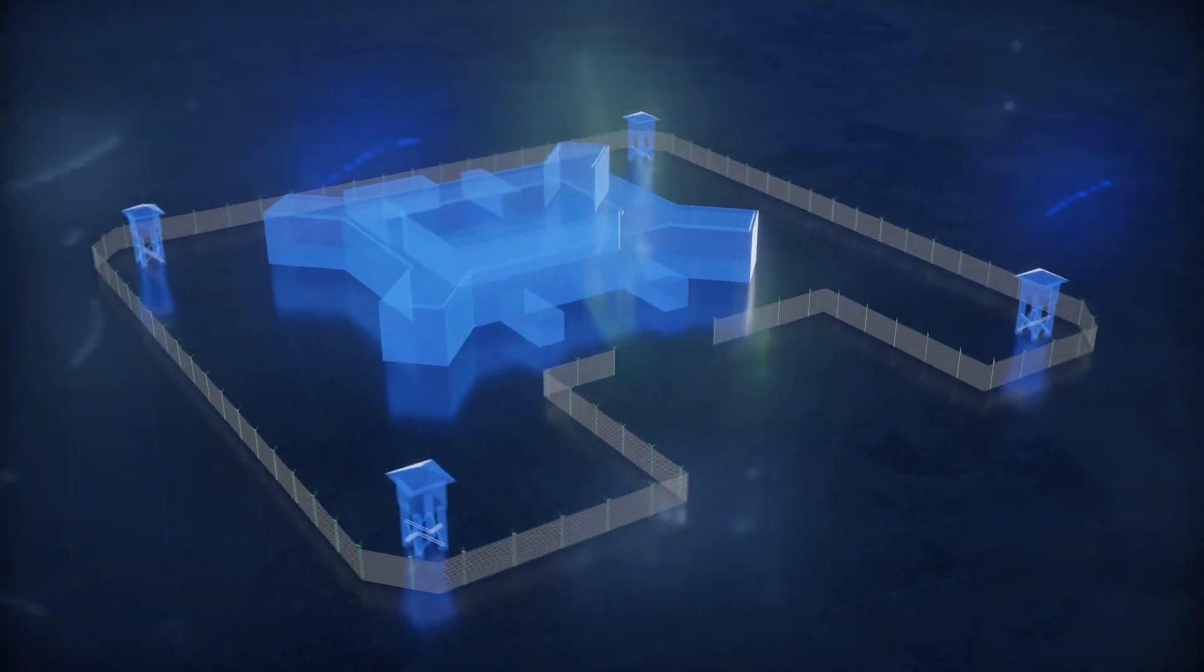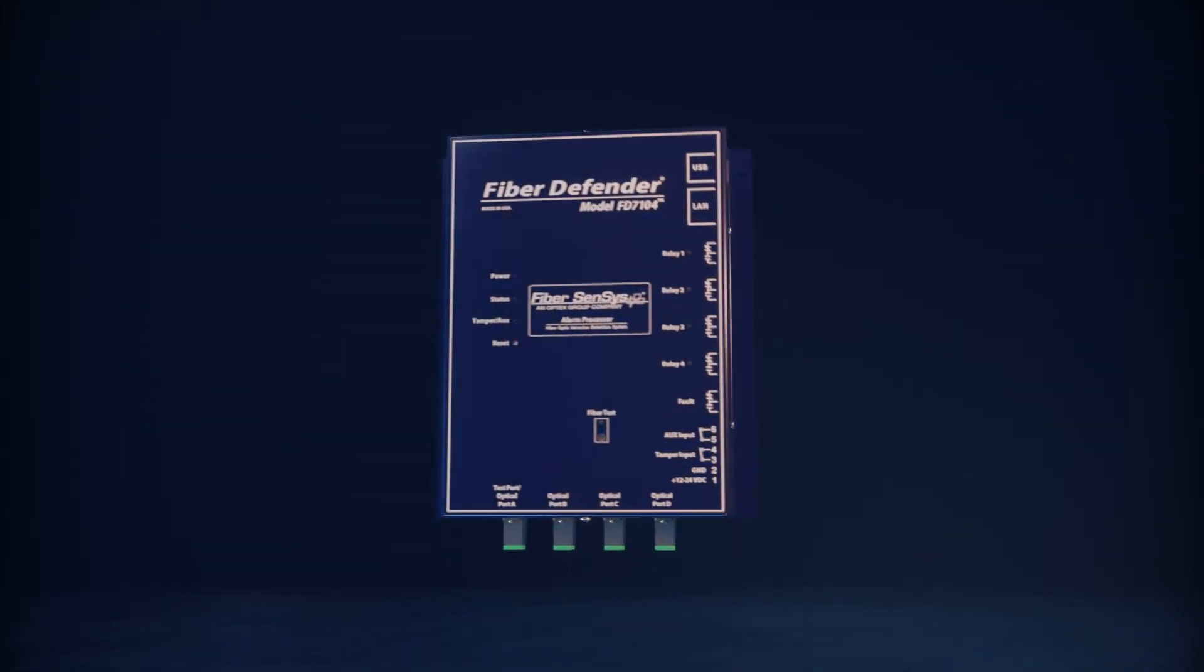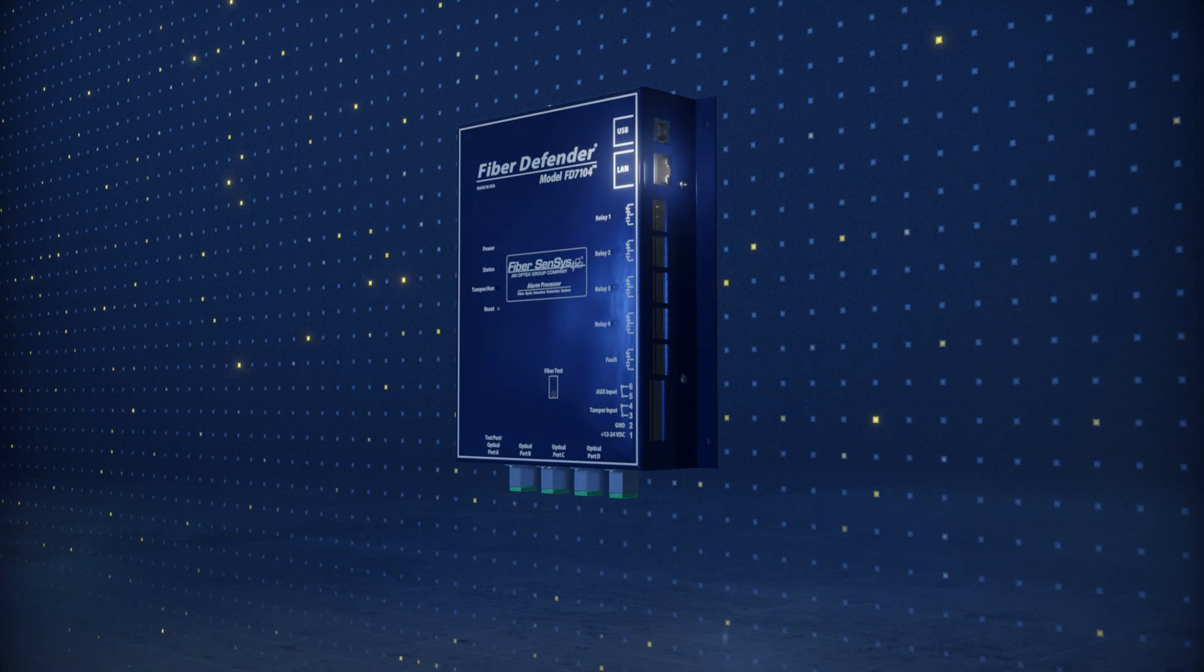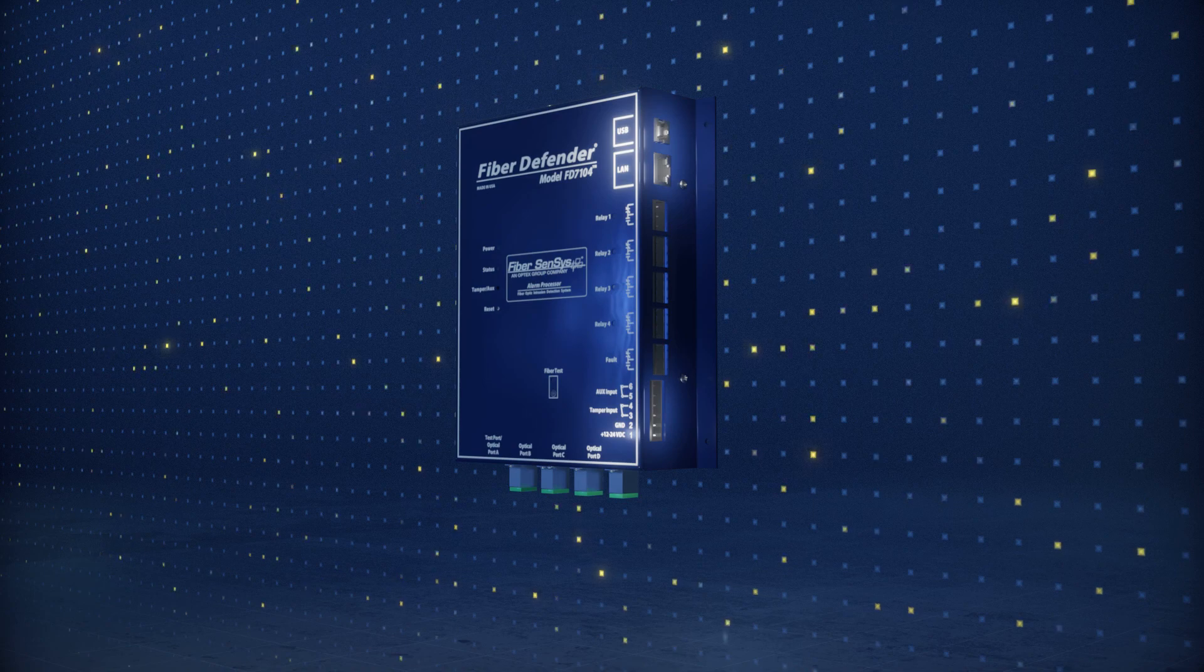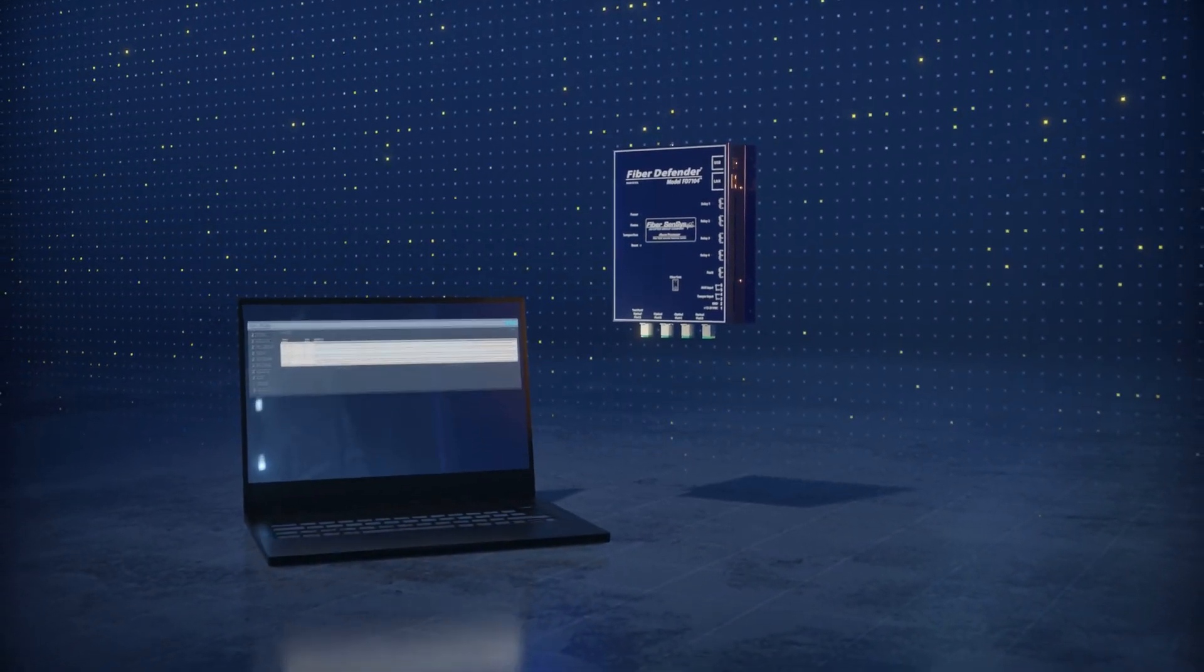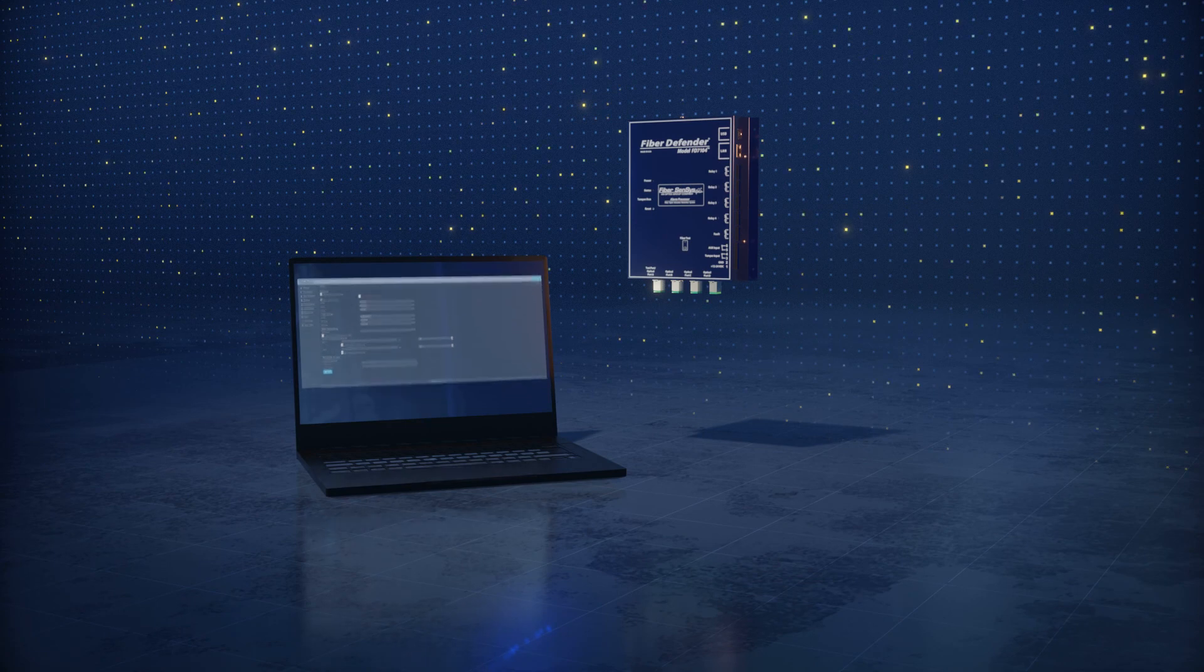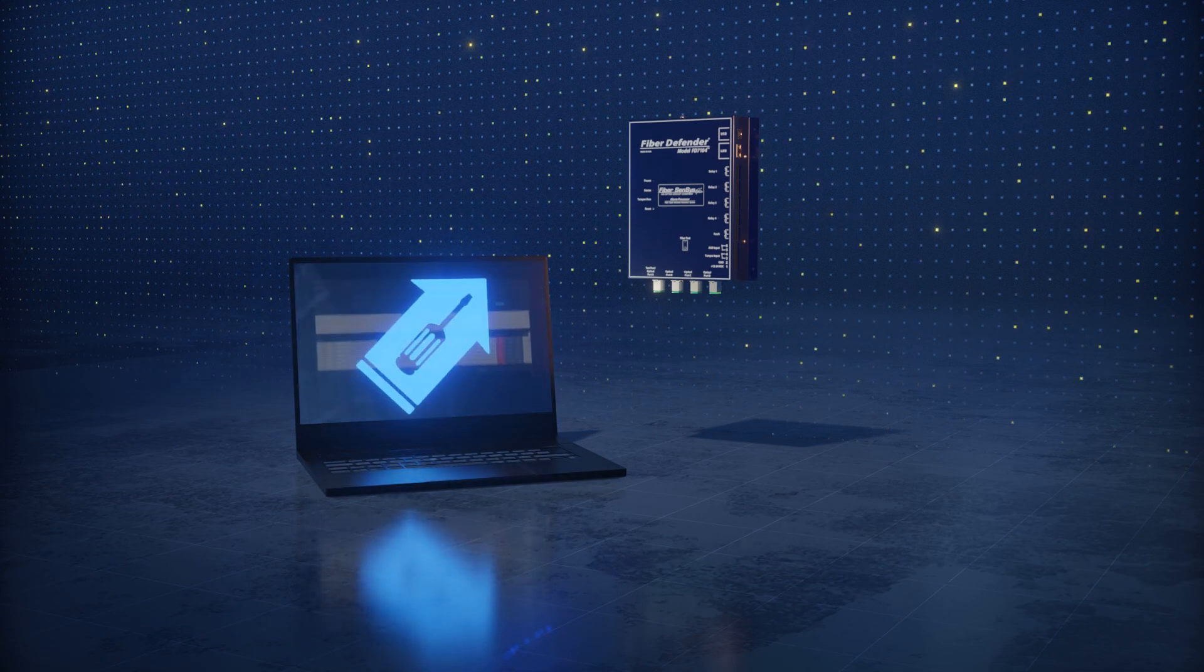The alarm processing unit can be mounted indoors or outdoors and supports power over ethernet or direct power supply connections. The field-upgradable interface also allows easy access to the embedded user manual, which updates with the latest firmware.